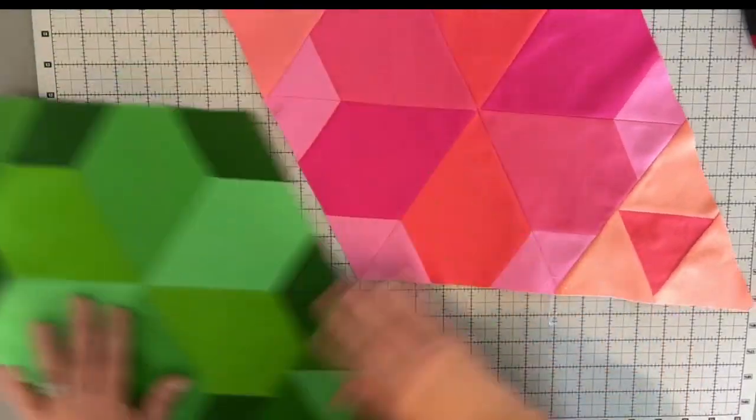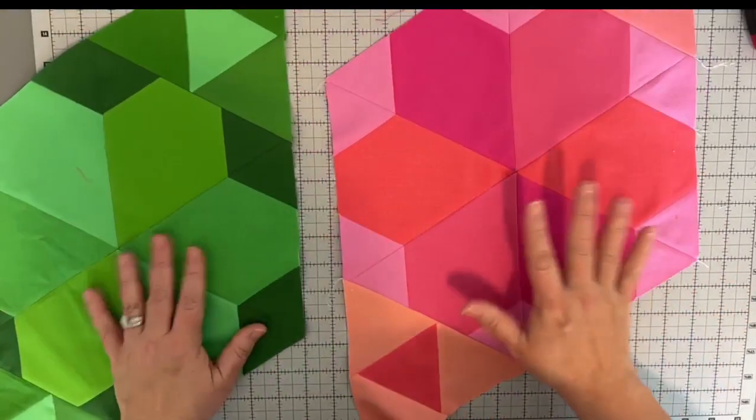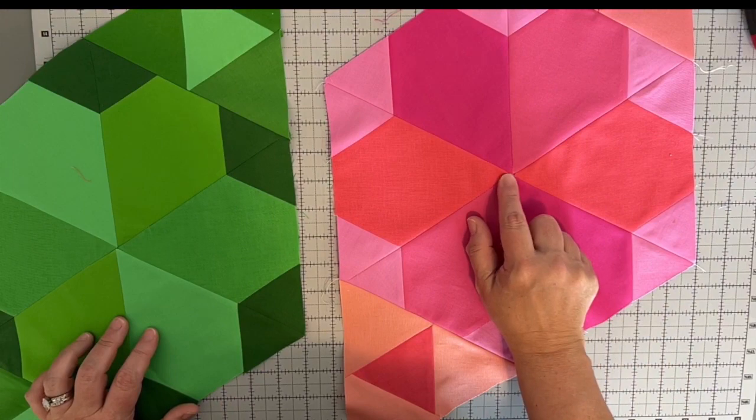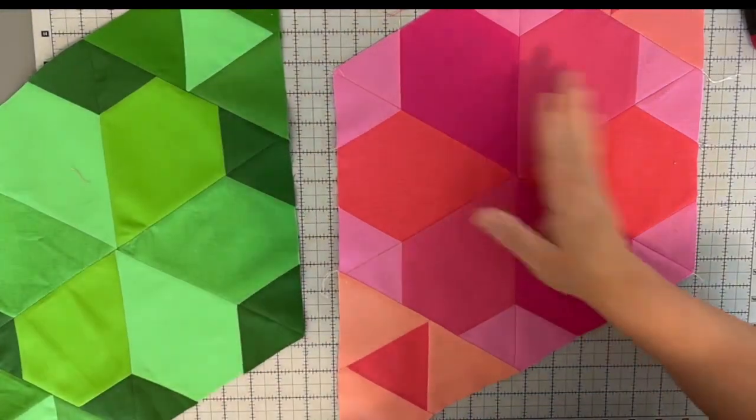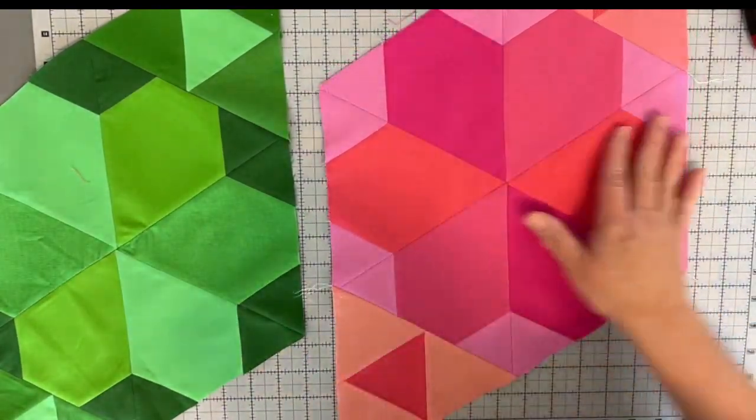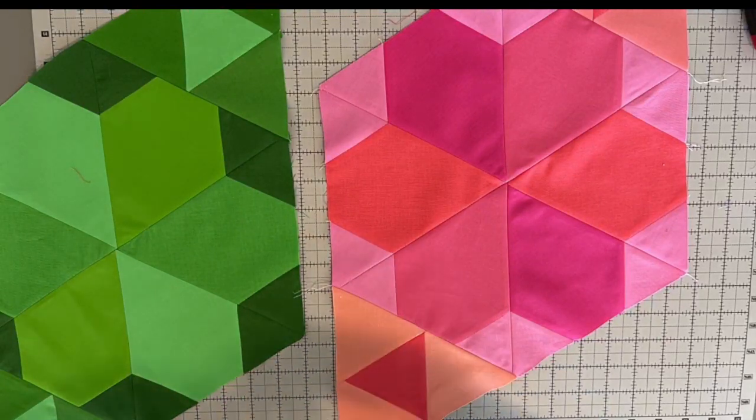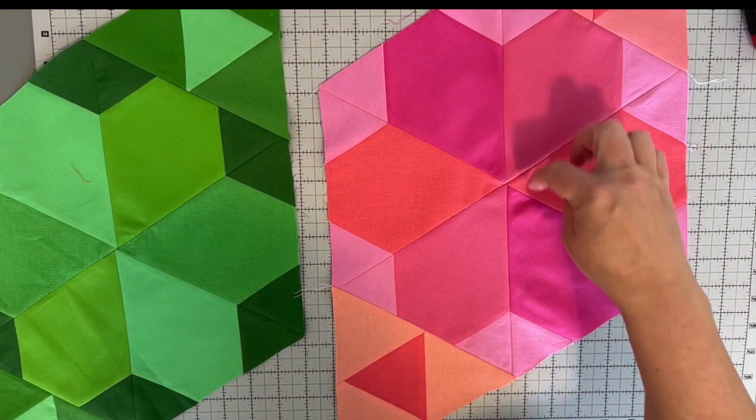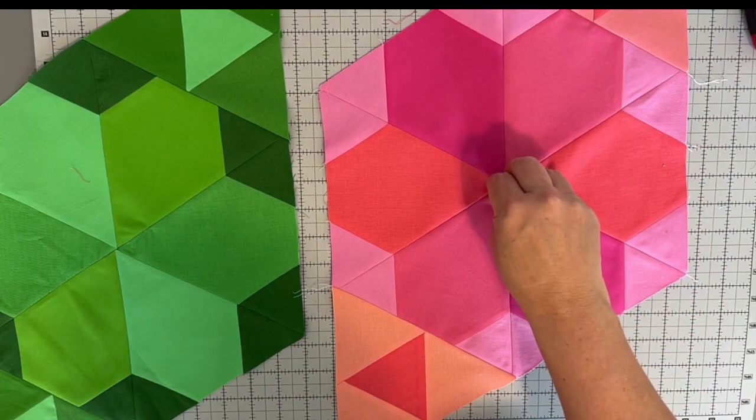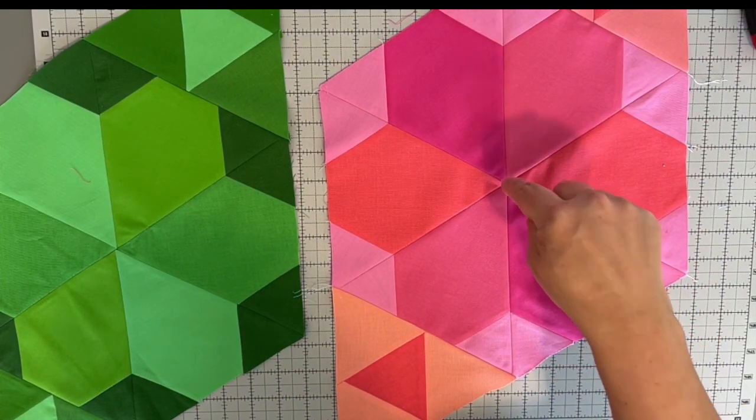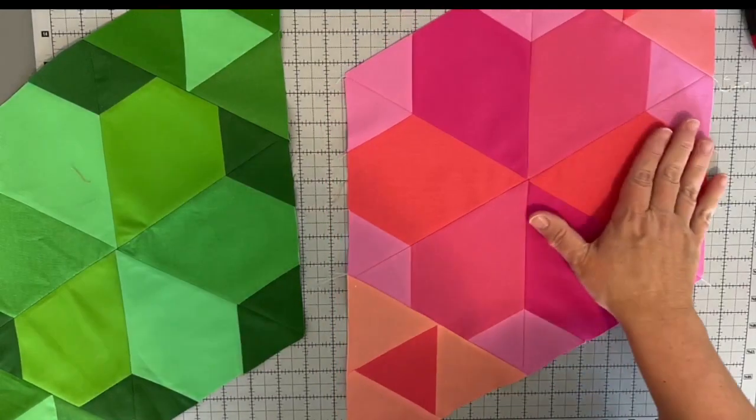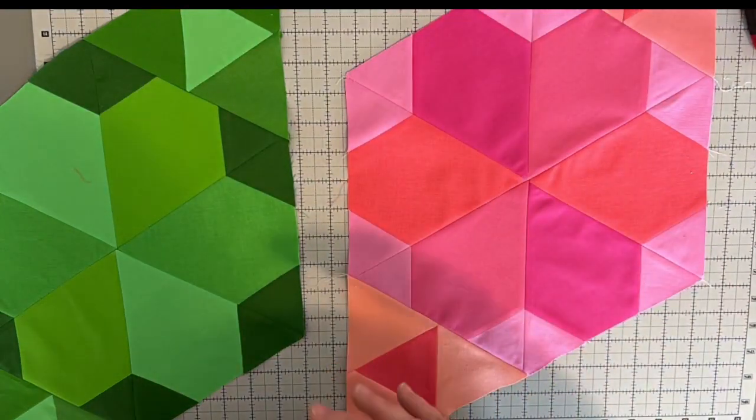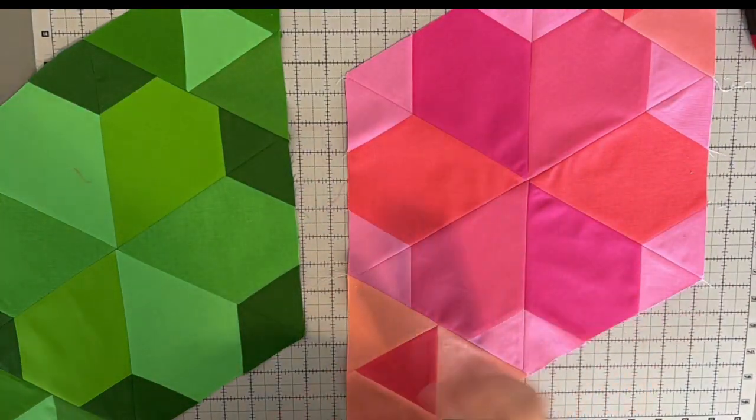So don't worry about it. That one looks like it's off and it's not, so keep some realism as you're doing things. You've got one, two, three, four, five, six pieces of fabric coming together in one tiny spot. Give yourself a little bit of grace with this, just let it do its thing.